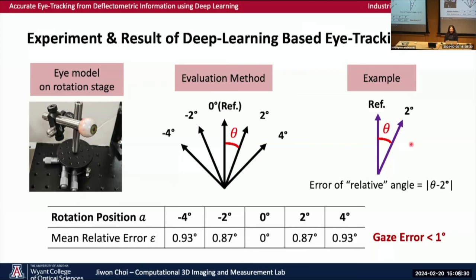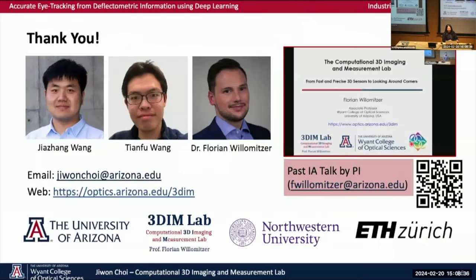The results in the table show that our evaluated gaze error is always less than one degree. To conclude, the deep learning-based eye tracking method using deflectometry revealed promising first results. Thank you for listening. If you have any questions, feel free to reach out to us and visit our group website for other projects, and also check out our PI's past IA talks. Thank you again for your attention.